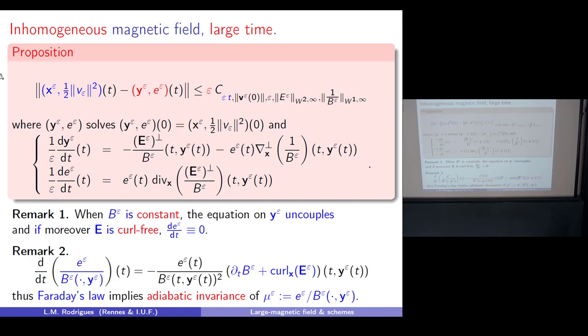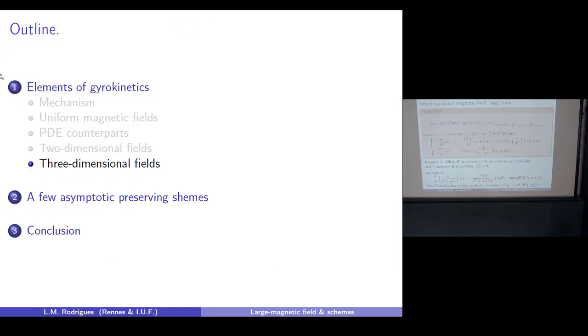We have also done things about non-linear PDEs, particularly at the numerical level. One classical test for capturing the quality of this limit is to check that you have an adiabatic invariant at the statistical level. I will not show this here mostly because of time, but it is a classical test.